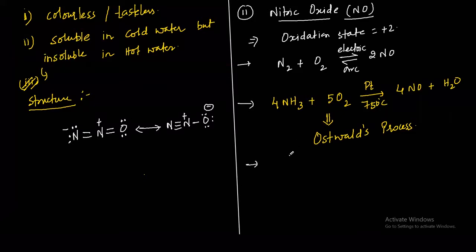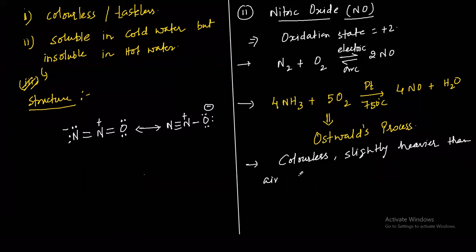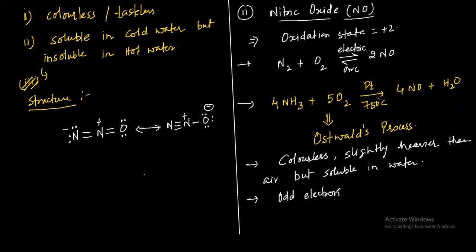Properties of nitric oxide: it is colorless and slightly heavier than air, but not soluble in water. If you count the number of electrons for NO — 8 plus 7 equals 15 — it is an odd-electron molecule. Hence it is paramagnetic in nature.